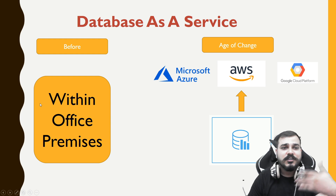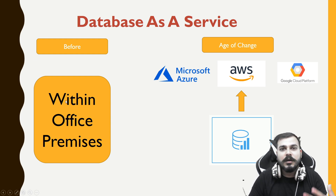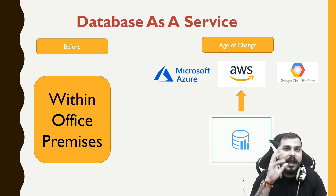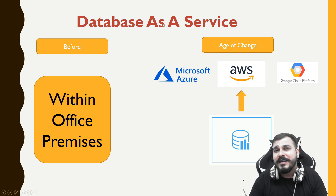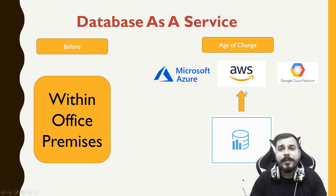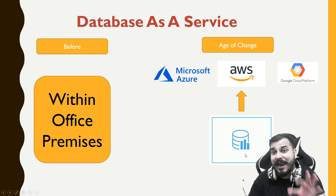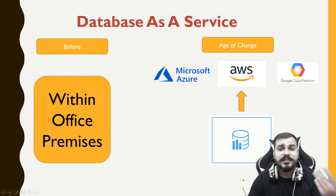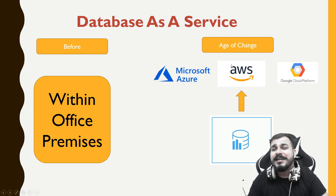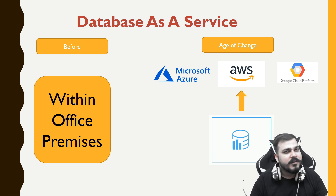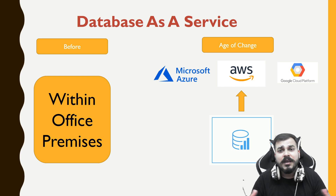If you go back a few years, many companies used to have databases within their premises and needed to hire many resources to manage them. Now with database as a service, you host your MongoDB on a cloud platform like Azure, AWS, or Google Cloud Platform. MongoDB Atlas has that functionality — you can use it on AWS, Azure, or GCP. All companies, including my current and previous ones, are going with database as a service.